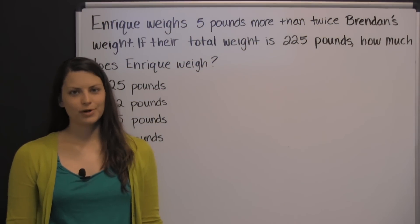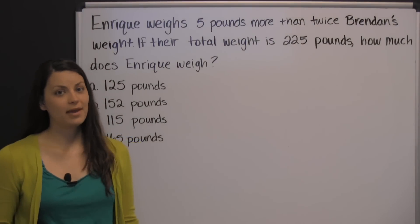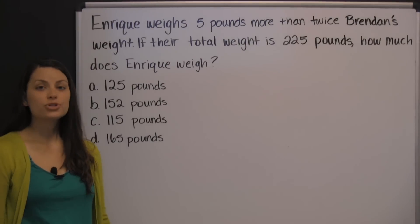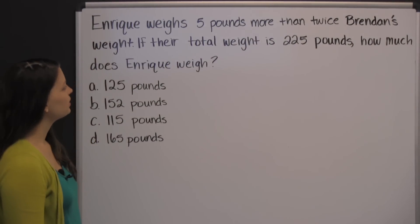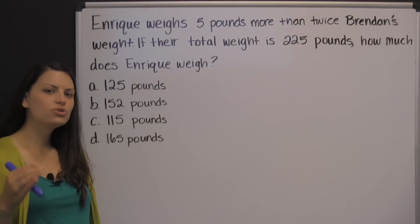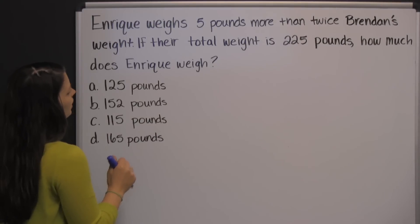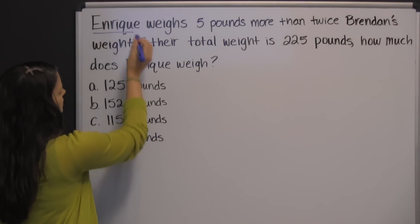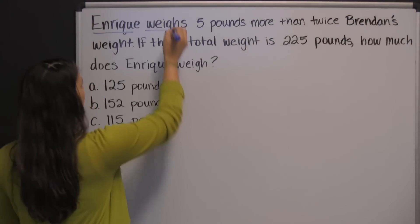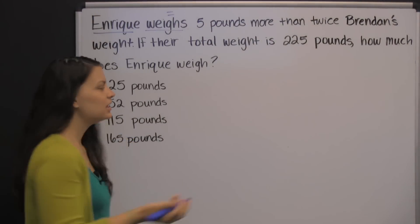You're going to encounter a lot of word problems on the TEAS test. Here's one example: Enrique weighs five pounds more than twice Brendan's weight. If their total weight is 225 pounds, how much does Enrique weigh? Even though this is a short problem, there are actually two different equations we can write from it. The first one starts with the first sentence.